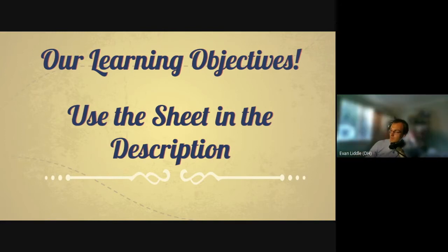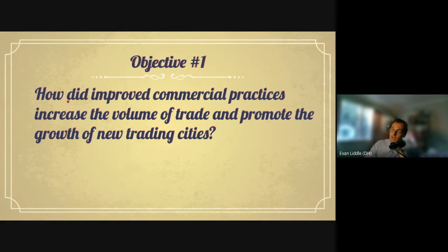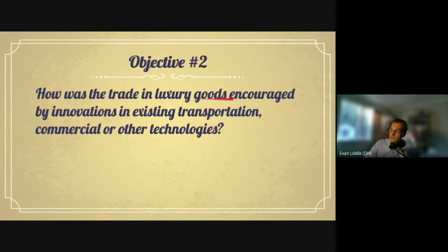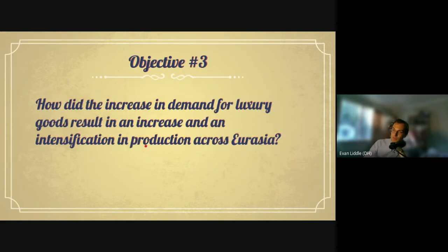Check the description for the note-taking sheet. Learning objective number one: how did improved commercial practices increase the volume of trade and promote the growth of new trading cities? Objective number two: how was trade in luxury goods encouraged by innovations in transportation, commercial, or other technologies? Learning objective number three: how did the increase in demand for luxury goods result in an intensification of production across Eurasia — that is Europe and Asia? As we go through this lecture, look for things that help answer those questions.